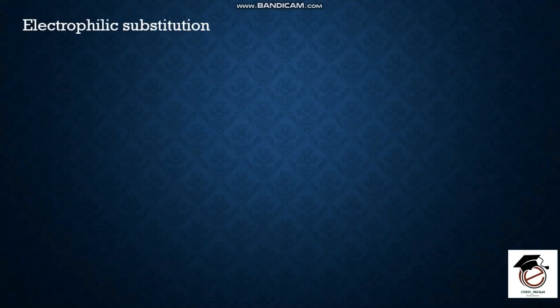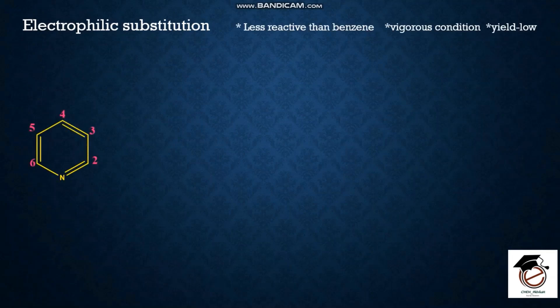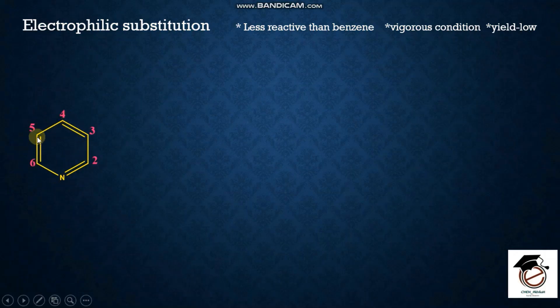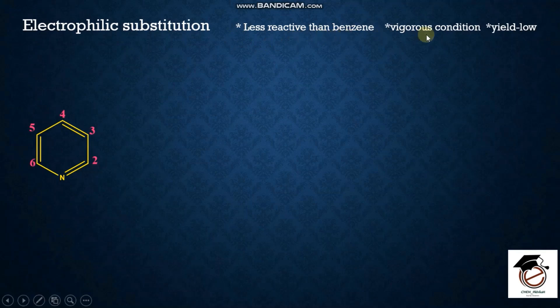Let's talk about electrophilic substitution. In pyridine, electrophilic substitution is not favored because nitrogen is electronegative. The electrons are drawn toward nitrogen, making the ring electron-poor, so electrophilic substitution is not a favorite reaction.